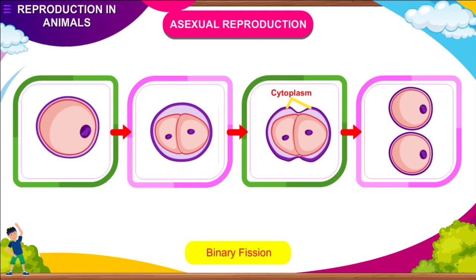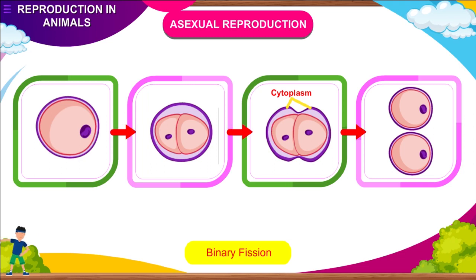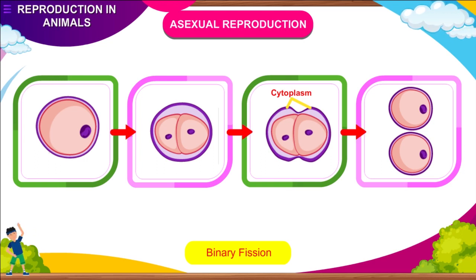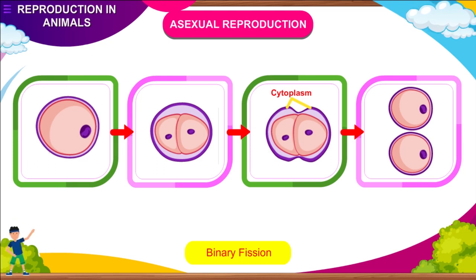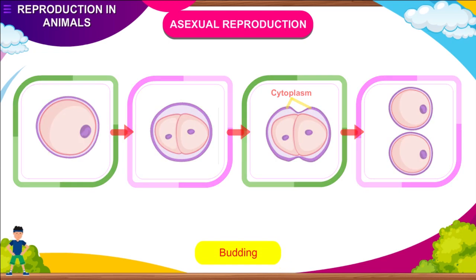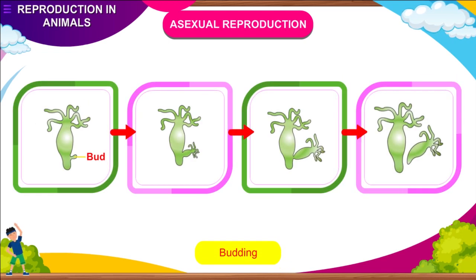When one mature unicellular organism splits into two individuals, the process is called binary fission. The parent nucleus divides into two nuclei. The cytoplasm divides into two parts, each containing a nucleus. A constriction develops in the body which deepens to form two new individual bodies.